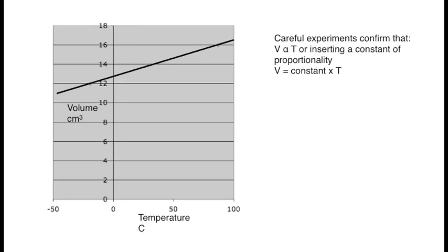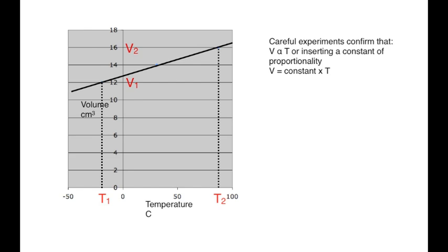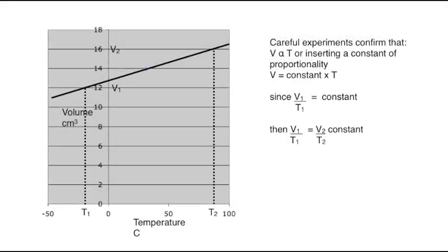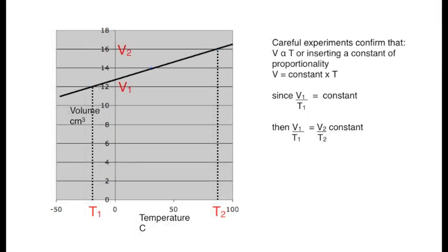We can replace the proportionality sign with an equal sign by inserting a constant. Adding to the graph by labeling our first volume and temperature V1 and T1, and our final volume and temperature V2 and T2, we can rearrange our equation to show that V1 over T1 is equal to a constant, and since the mass of the gas trapped in the syringe remained the same, and assuming that the pressure remains constant because the barrel of the syringe is free to move, it follows that V1 over T1 equals V2 over T2. This is probably the most common algebraic expression of Charles' law.